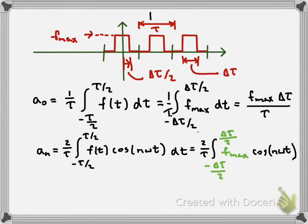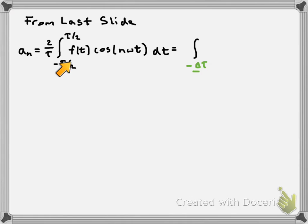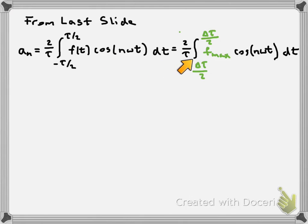f(t) is just f_max over the pulse. Again, instead of integrating over the whole interval, I only need to integrate when the function is non-zero — from −δτ/2 to δτ/2. Over that interval f(t) = f_max. Since this is an even function, I can integrate from 0 to δτ/2 and multiply by 2.